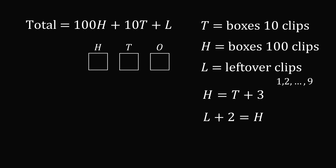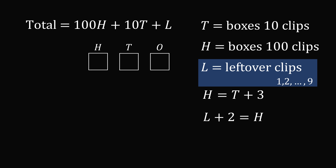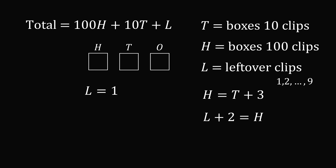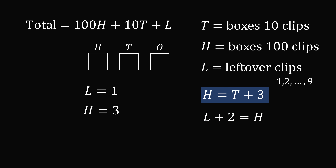So now we have a systematic way to think about this problem. Let's go through a single answer first. We know the number of leftover clips has to be a whole number from 1 to 9, so let's start with L equals 1. Then L plus 2 equals H, so H equals 3. And since H equals T plus 3, if H is 3 then T must equal 0. So one possible answer is H equals 3, T equals 0, L equals 1 — and the number is 301.